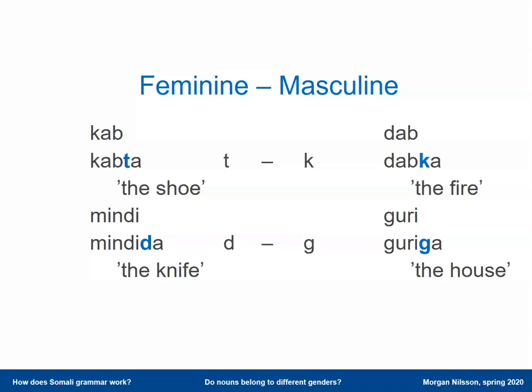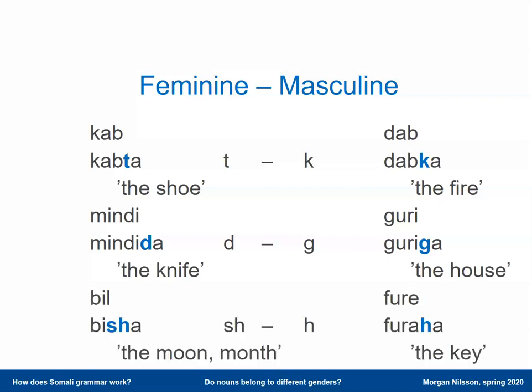So 'the knife' is 'mindida,' and 'the house' is formed with G. Furthermore, if the noun ends in L, you cannot add a T after an L — instead these two merge: L and T merge into SH. So the definite form of 'bil' is 'bishee,' and this SH now marks the feminine gender of this noun.